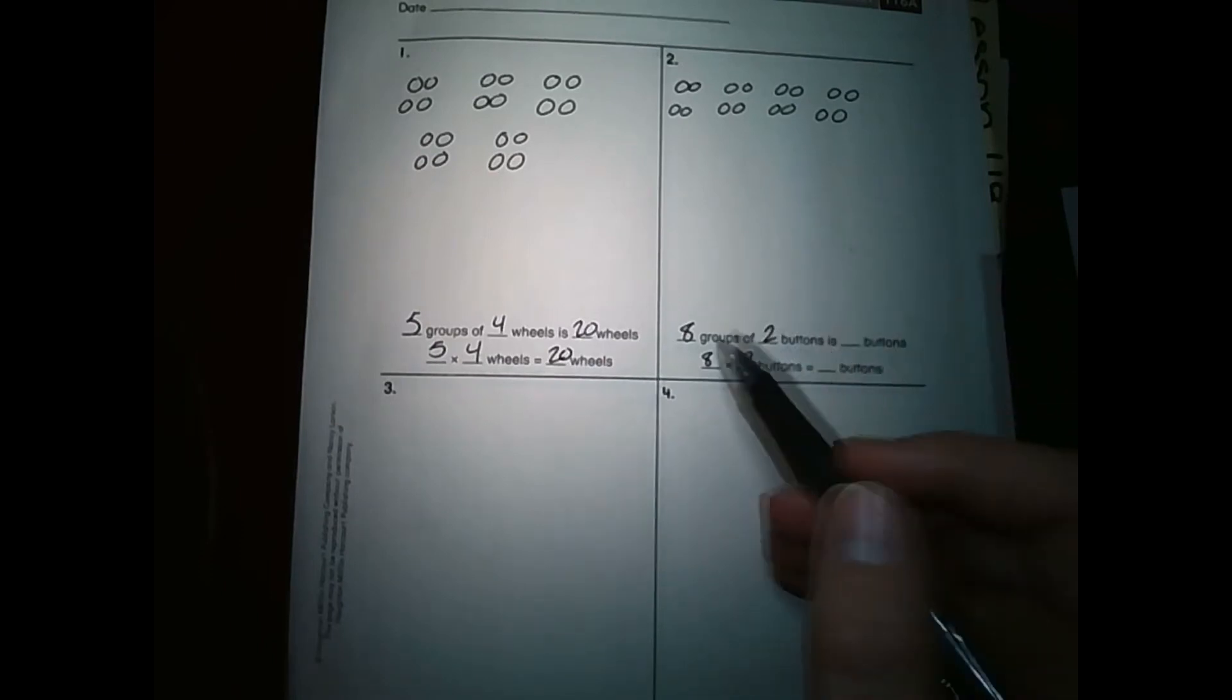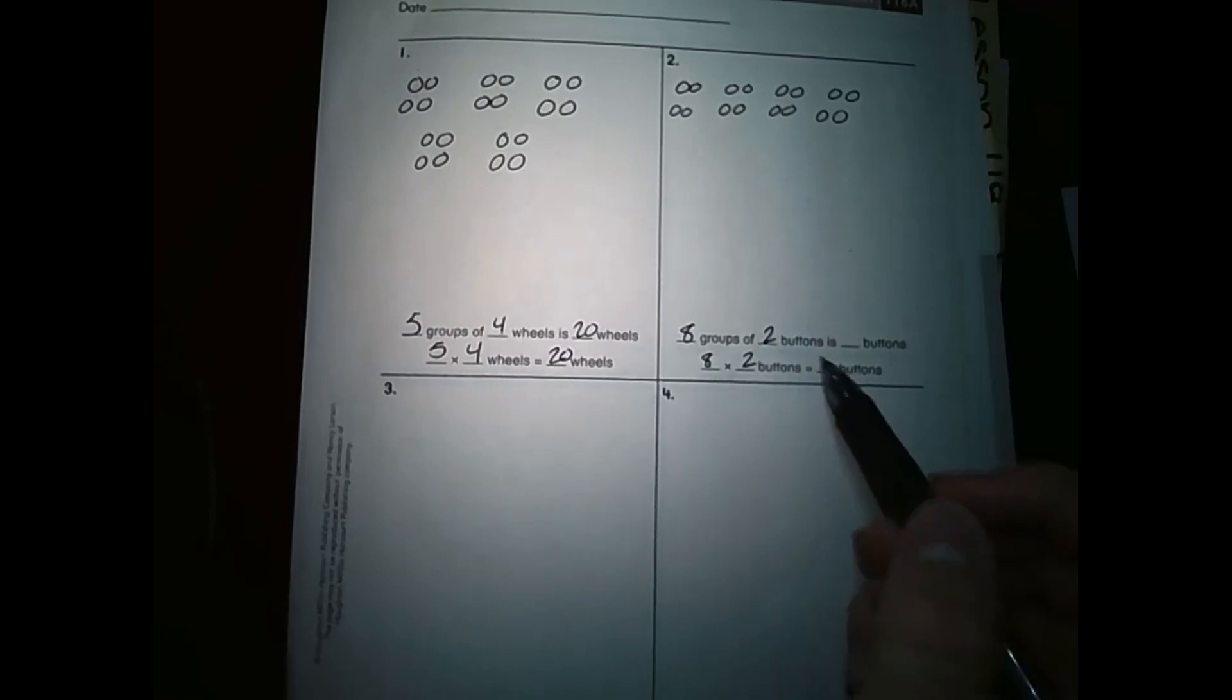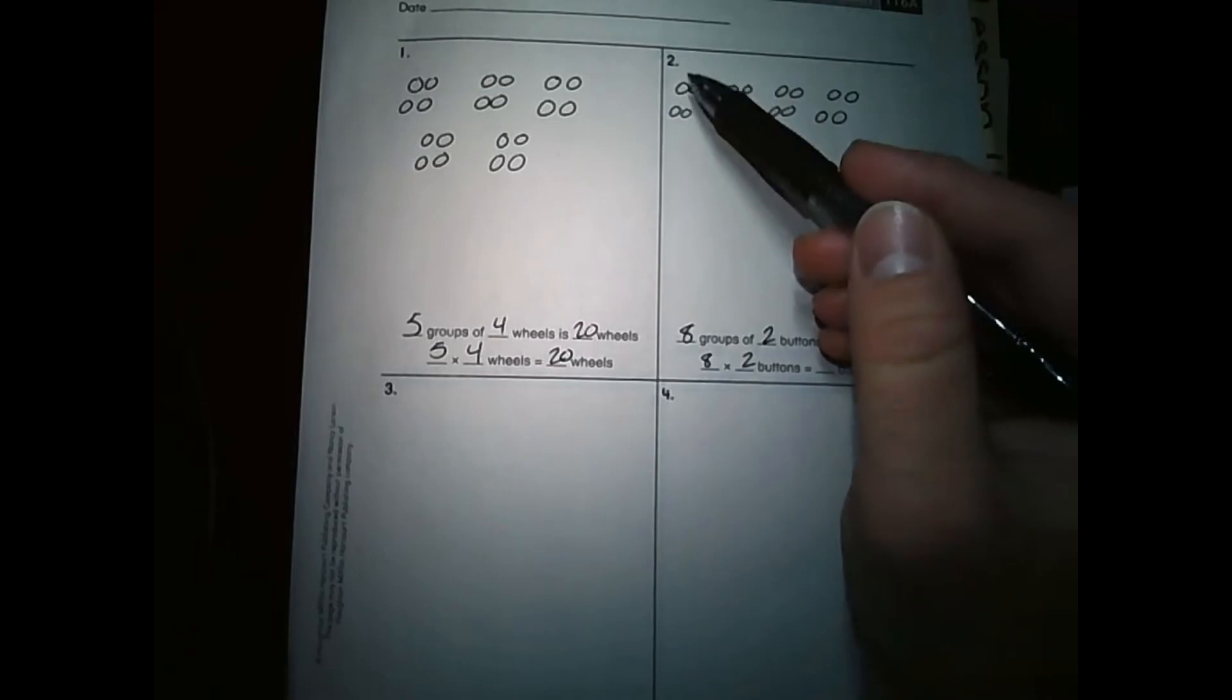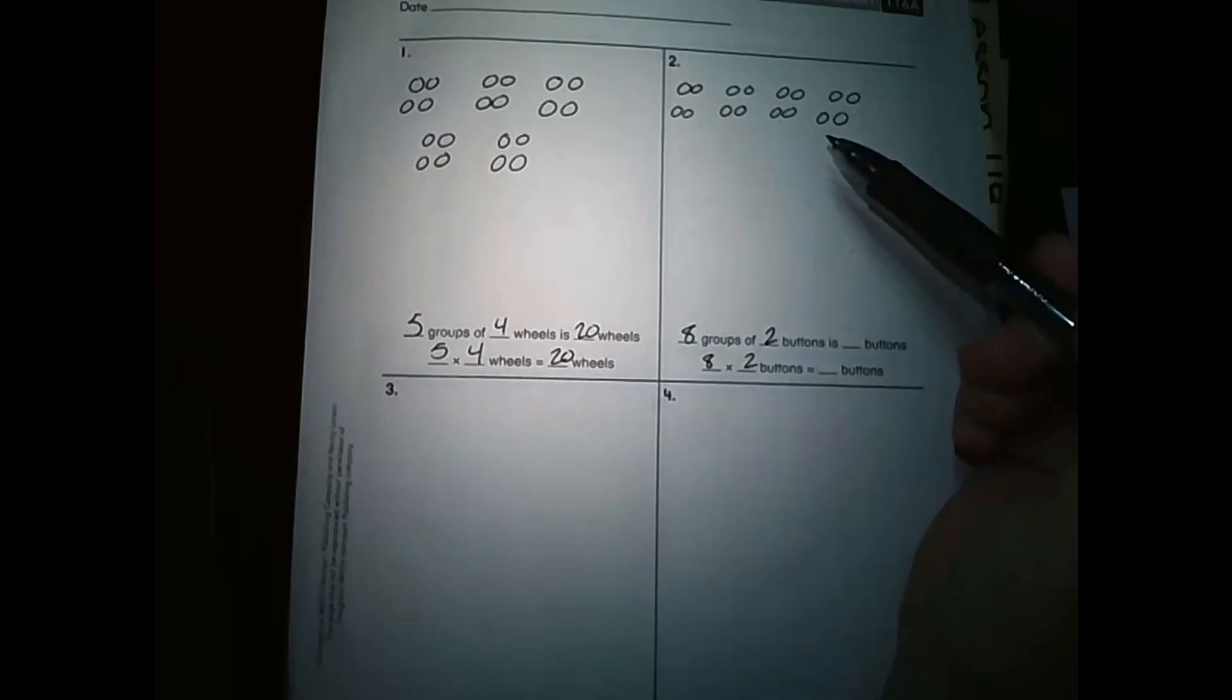Number two. This problem, I've created eight groups of two buttons. So here are my eight groups. One, two, three, four, five, six, seven, eight. And you'll notice in each group there is one, two. There are two buttons.